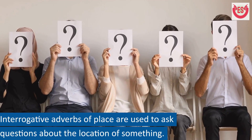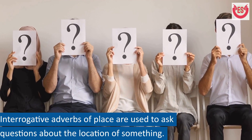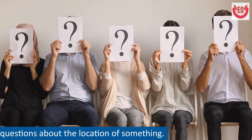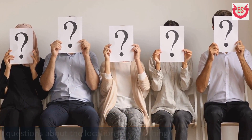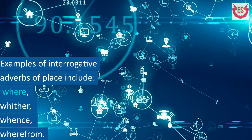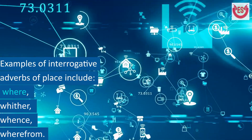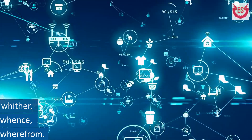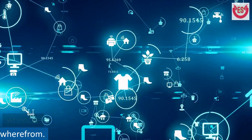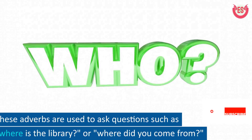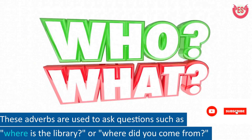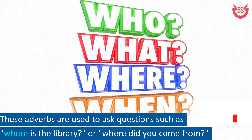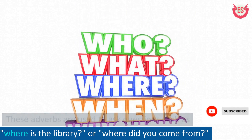Interrogative adverbs of place are used to ask questions about the location of something. Examples include: where, whither, whence, and where from. These adverbs are used to ask questions such as: Where is the library? Or, where did you come from?